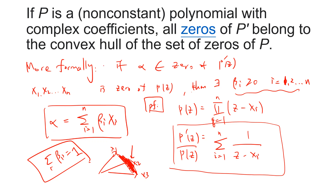One special case is when there is a multiple root of P(z). If alpha coincides with one of the zeros, this is trivial — you just choose the corresponding beta to be one and the rest zero.